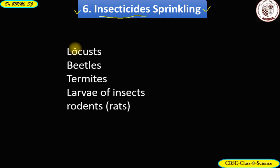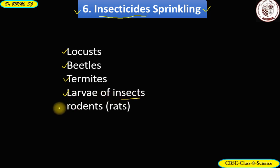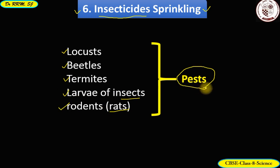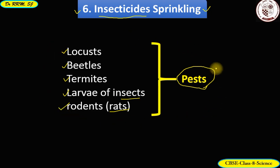Farmers have to protect their crops from a variety of insects and pests such as locusts, beetles, termites, larvae of insects, and rodents such as rats. They are collectively termed as pests. They damage or eat the crops for their survival. Therefore, the farmers have to fight against them for their own survival.